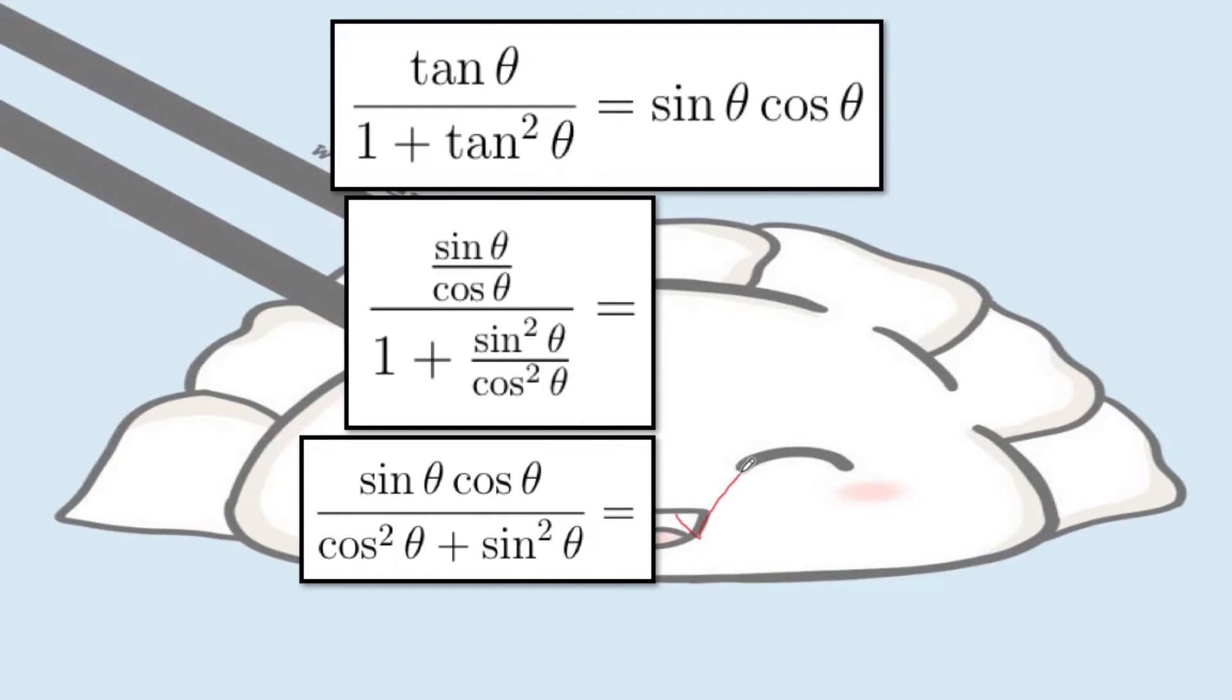Now, in this step, we're technically done. All we have to do is notice that cosine squared theta plus sine squared theta is a Pythagorean identity, and this is equal to 1.